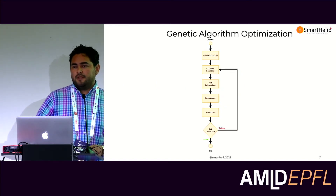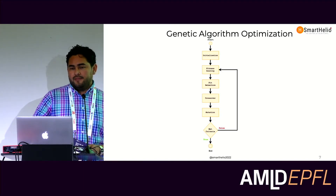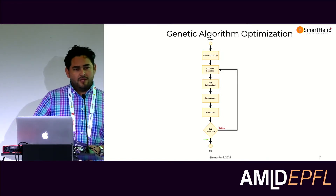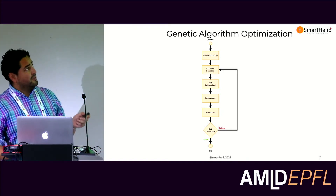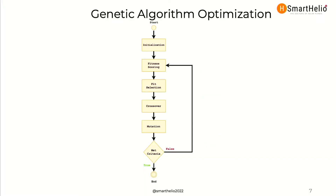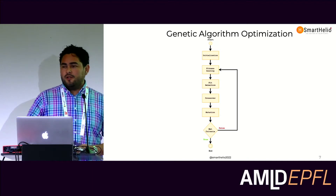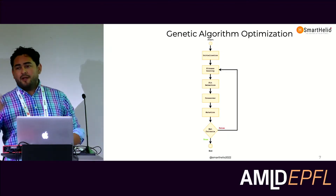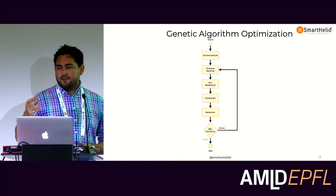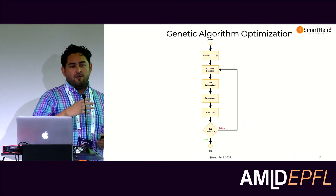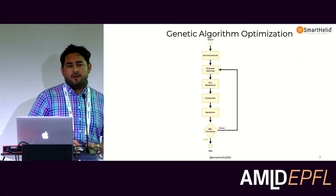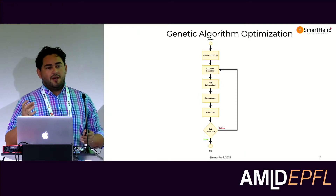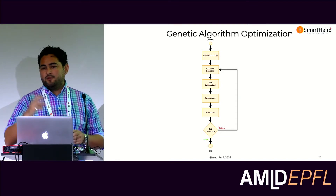I'm pretty sure most of you are familiar with genetic algorithms — if not, I'll explain briefly. This was introduced in the 1970s, so it has been around for some time. It is inspired by evolution itself. First you have an initial population, then fitness scoring — which can be any metric you define. Then fitness selection: some characteristics of the population members pass to the next generation. Then comes crossover, where you take two members of the population and mix their characteristics to create a new member for the next generation.